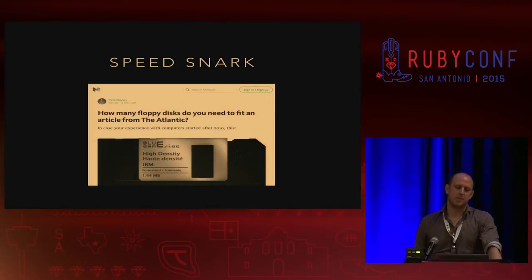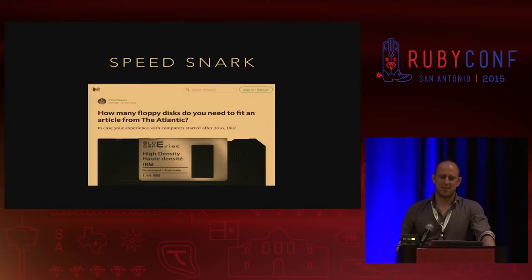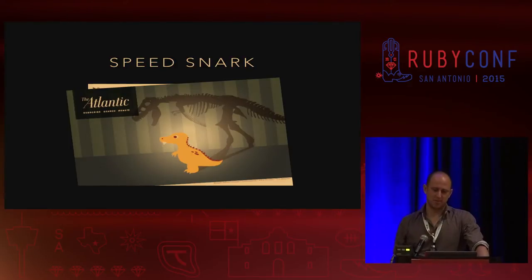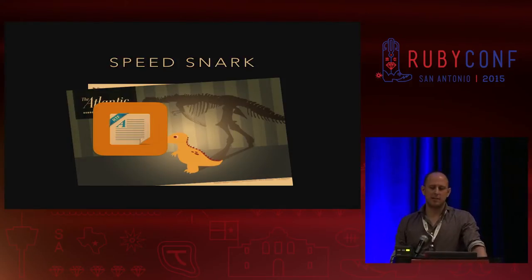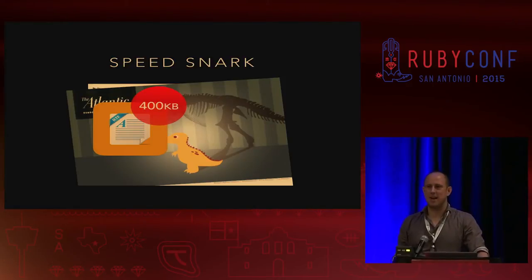This article from a guy called Pete Davis asks how many floppy disks a modern article on the Atlantic takes, if you were to download it and put it on floppy disks. It was an article about dinosaurs, which is awesome. So how big, if you take the four pretty large images and stick them in an RTF file with the text of the 6,000 word article — how big would you say that is? Actually, only 400K. And most of that's images. The text is about 37K worth of ASCII text. Fits on a floppy disk with space to spare.